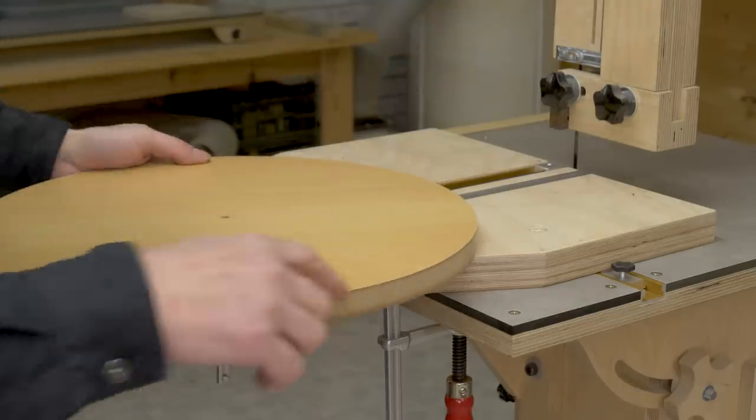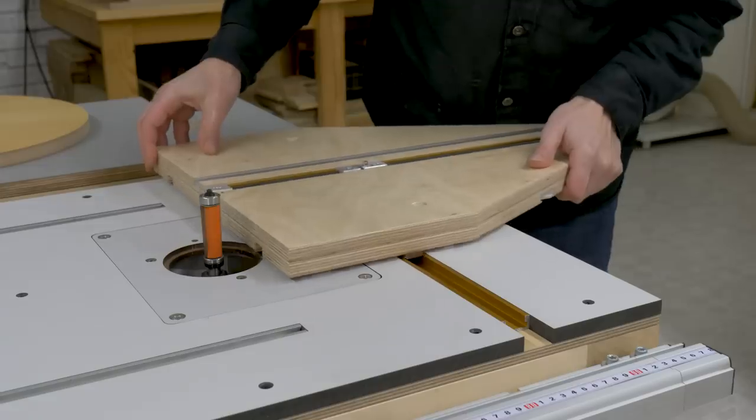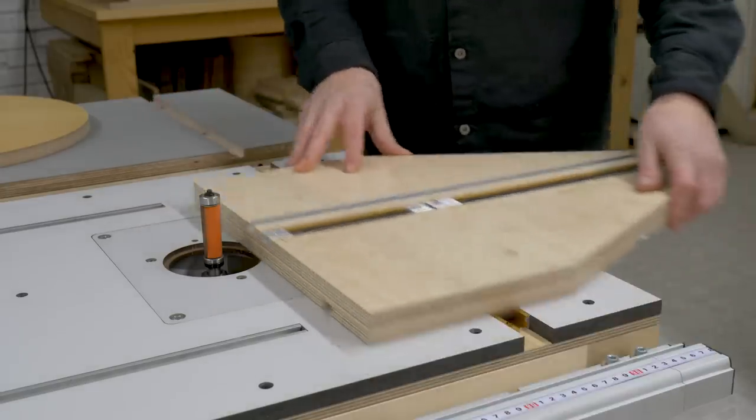On the bottom side of the melamine, there's also some splintering. For some projects, cuts of this quality are enough, but if we need a perfect cut, the next step is to use the router table.